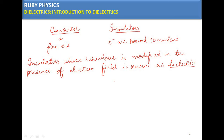Dielectrics are nothing different — dielectrics are insulators only. Dielectrics are those substances in which no electric current flows, but they allow an inductive effect to pass through them when they are placed in an electric field.